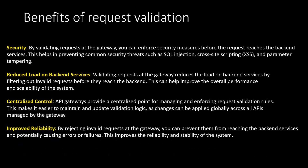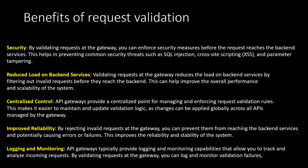Fourth is improved reliability — by rejecting invalid requests at the gateway, you prevent them from reaching backend services and potentially causing errors or failures, improving stability. Fifth is logging and monitoring — API Gateway provides logging and monitoring capabilities that allow you to track and analyze incoming requests, as we saw in CloudWatch logs. By validating requests at the gateway you can log validation failures, which helps in identifying and mitigating potential security threats or issues.